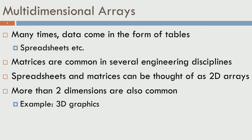Multidimensional arrays appear many times in the form of tables. I am sure you have seen spreadsheets or matrices. These are all very common things in several engineering disciplines and you can think of them as a two-dimensional array. You have one dimension which is the set of rows, another dimension which is the set of columns, and you can have rows and columns which form a table. This could be a 2D array.